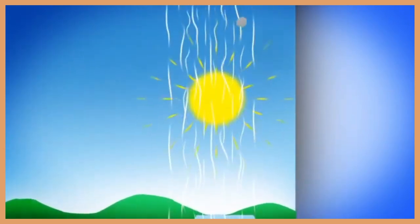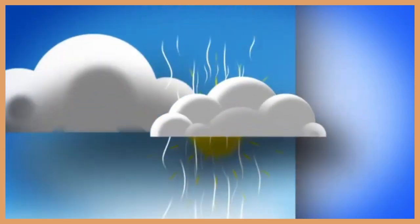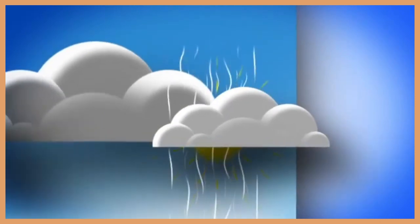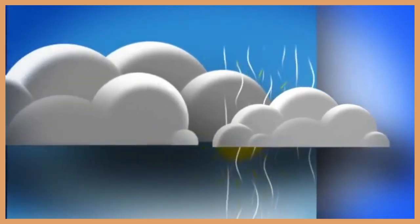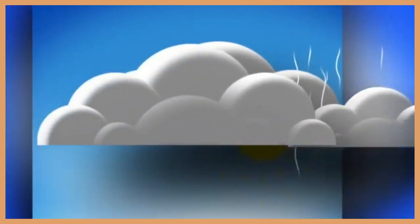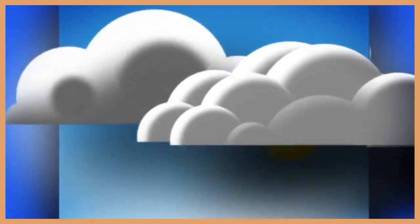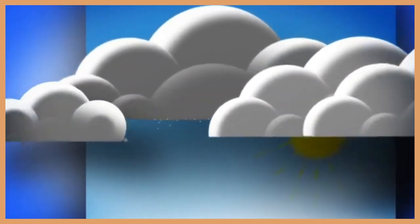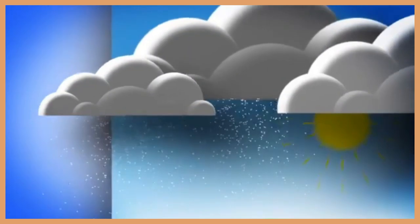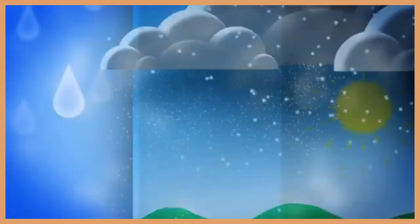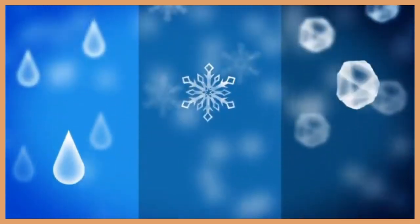As water vapor rises, it cools and condenses back into liquid water droplets that form clouds. These droplets collide, getting bigger and bigger, and the water eventually falls to the ground as liquid rain or solid snow or hail.